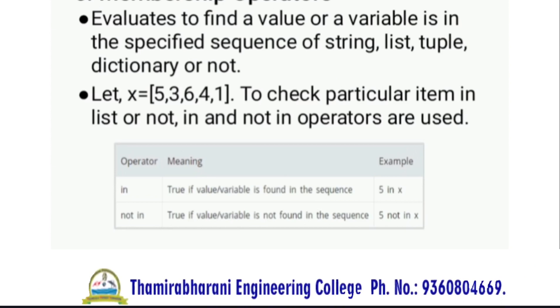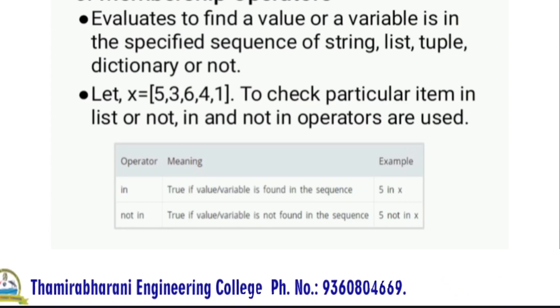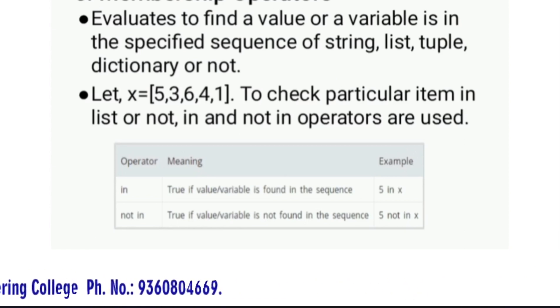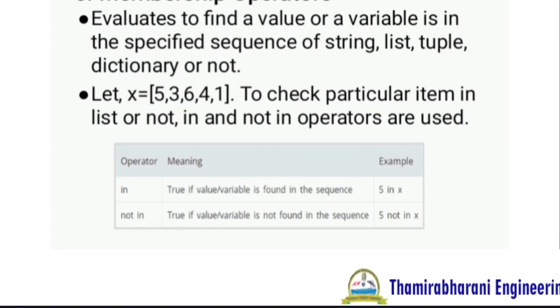I have considered one example: list x equals [5, 3, 6, 4, 1]. The 'in' operator is used to check whether a particular element is present in the list. The 'not in' operator is used to check whether a particular element is not present in the list.